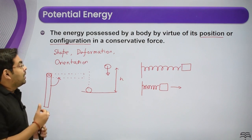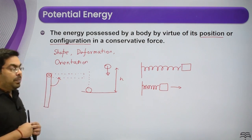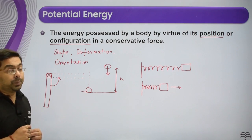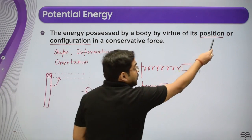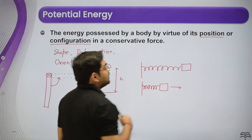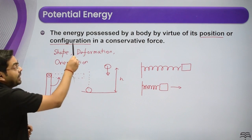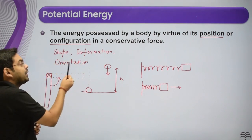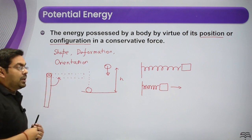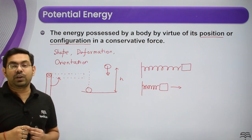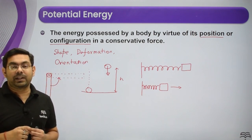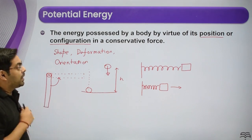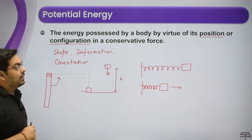This type of energy present in a body or system due to positions, configuration, shape, deformation, or orientation of its different parts — this is what we call potential energy.